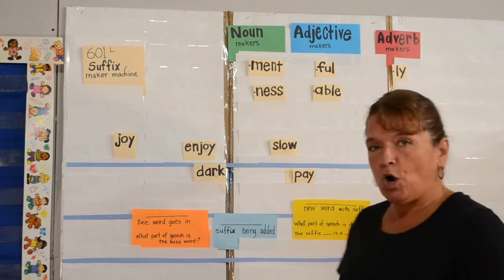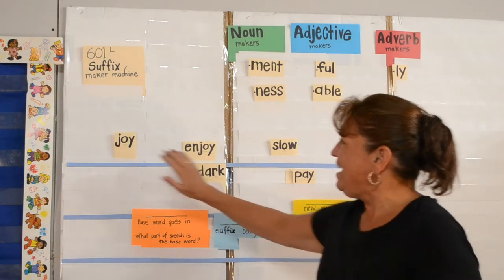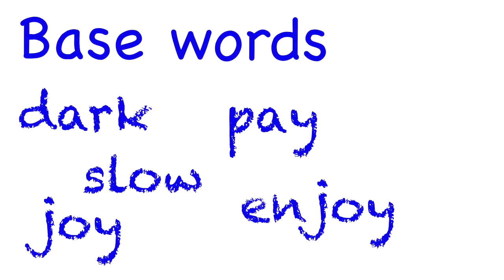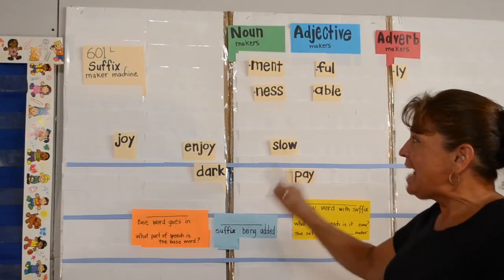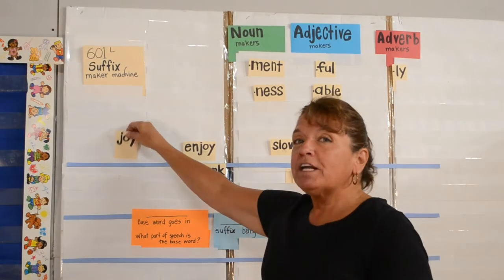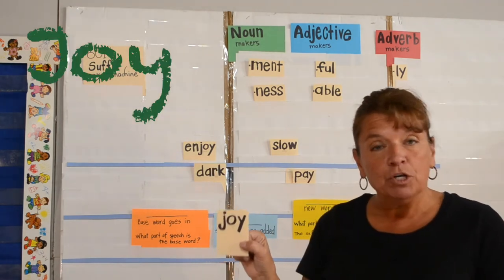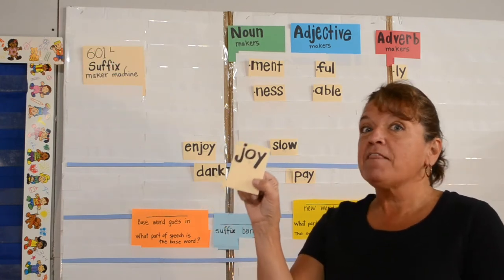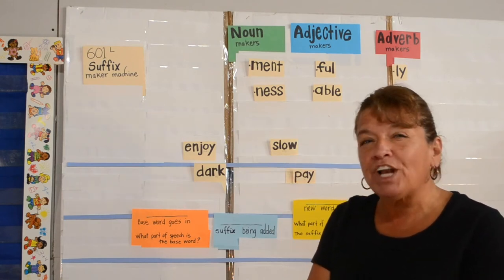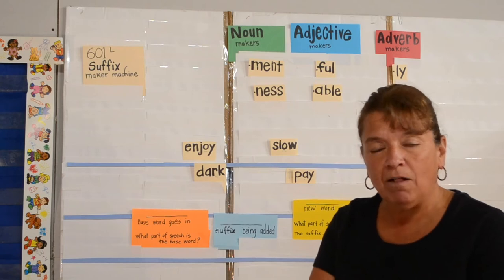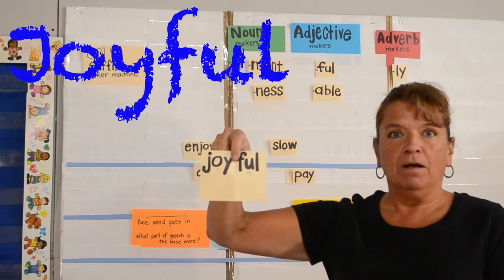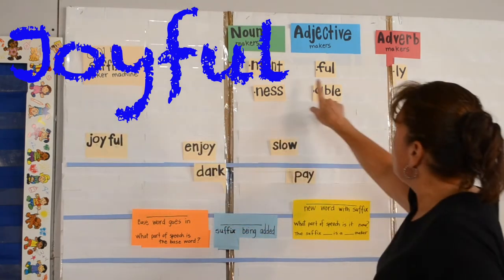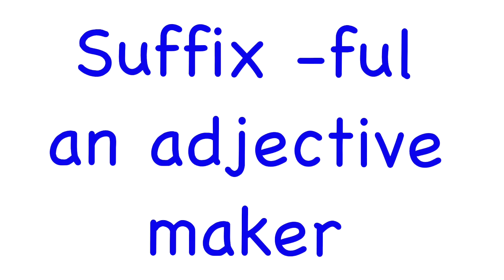We're going to start with some base words: joy, enjoy, dark, slow, and pain. We're going to take each base word and look at the part of speech. Joy is a noun. We're going to take that noun joy and put it inside the suffix maker machine. Inside the suffix maker machine, we're going to add the suffix F-U-L. Out comes the new word joyful — now the word is an adjective. So we call the suffix F-U-L an adjective maker.